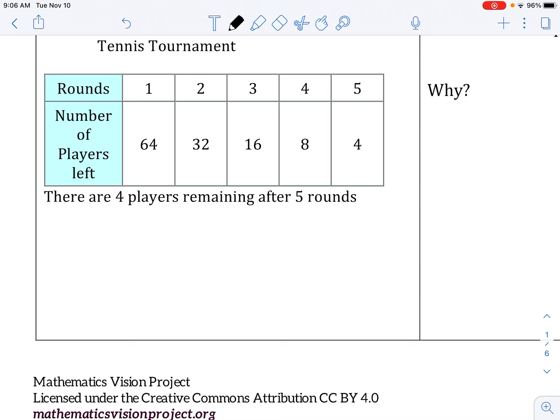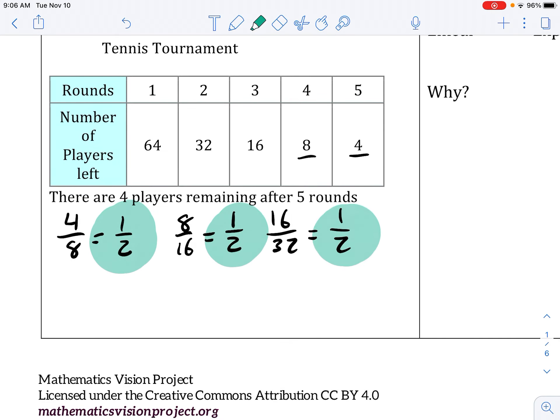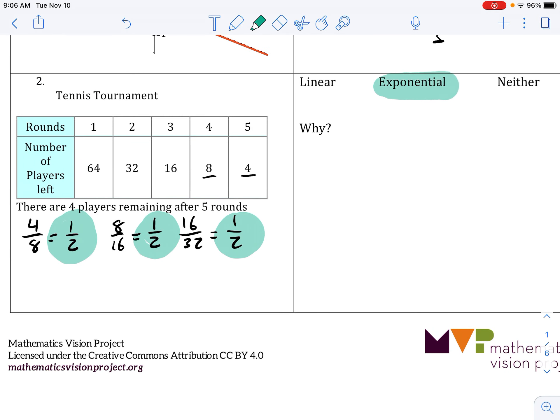So then we could work backwards. If we did 4 over 8 that equals 1 half, or if we did 8 over 16 that equals 1 half, if we did 16 over 32 that equals 1 half. So it has a common ratio of 1 half, so we would say this is exponential and it has a common ratio of multiplying by 1 half.